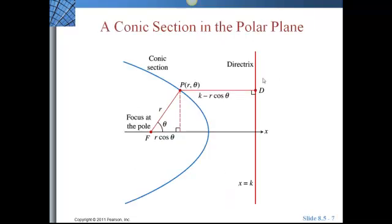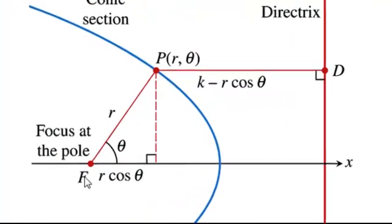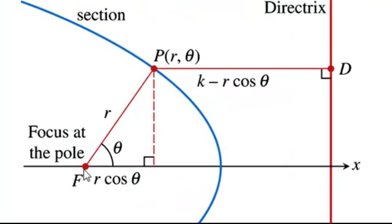Looking at conic sections in the polar plane. So here we have our focus at the pole, which in the polar plane is your origin, it's the pole. We have the distance from the focus to any point that becomes the radius, or R. Here we have theta, and our X value here is R cosine theta. You thought you were done with trigonometry, but really you're not.